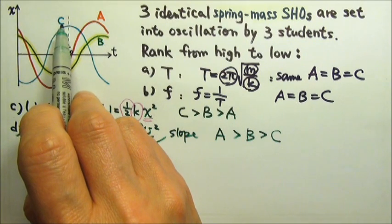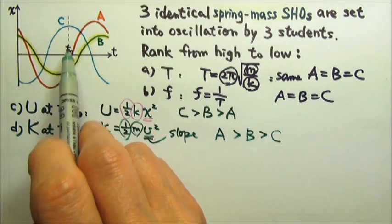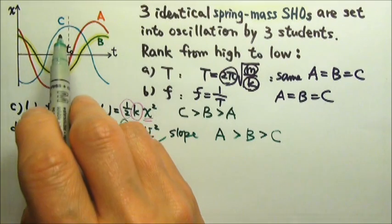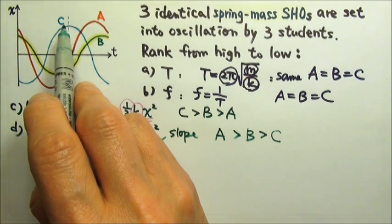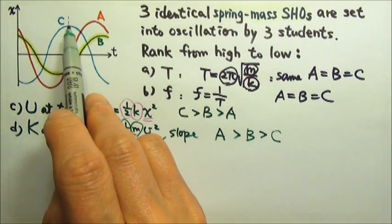In fact, C has zero slope at t₀. So the speed for C at t₀ is zero. There's no kinetic energy for C at t₀.